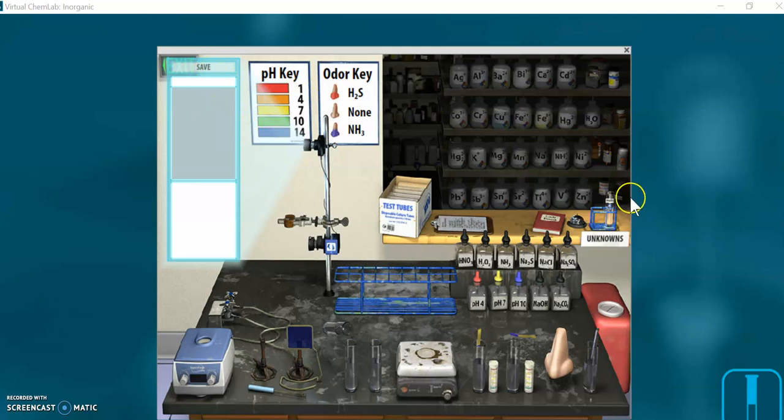And it says to click create unknown. So after I clicked up here, you might not have seen it, but over here we have an unknown. It says practice unknown. You can see that over here. I'm just going to drag this guy over here to our test tube rack.